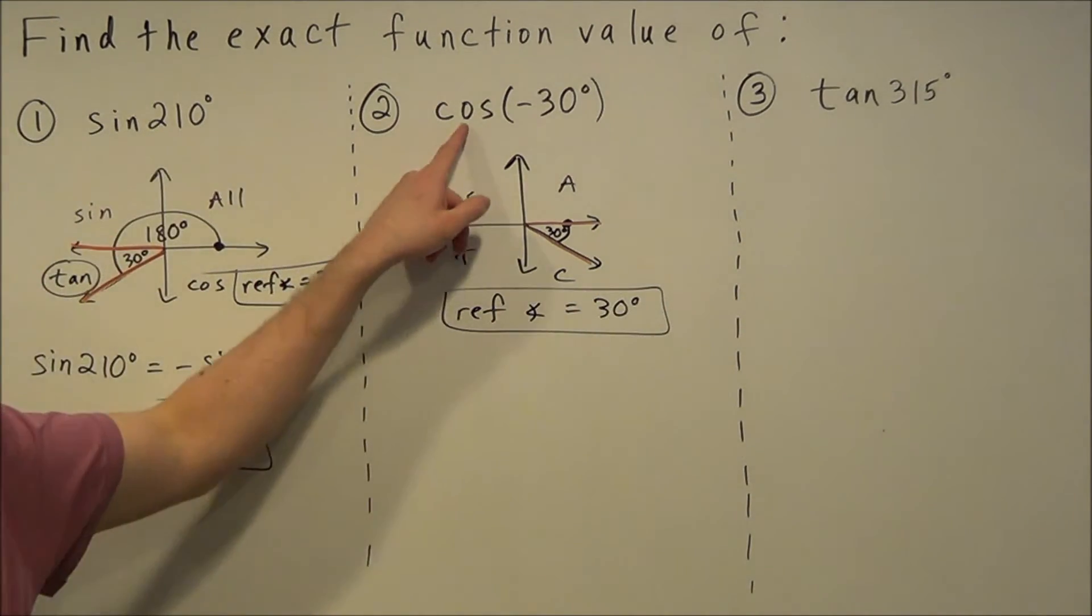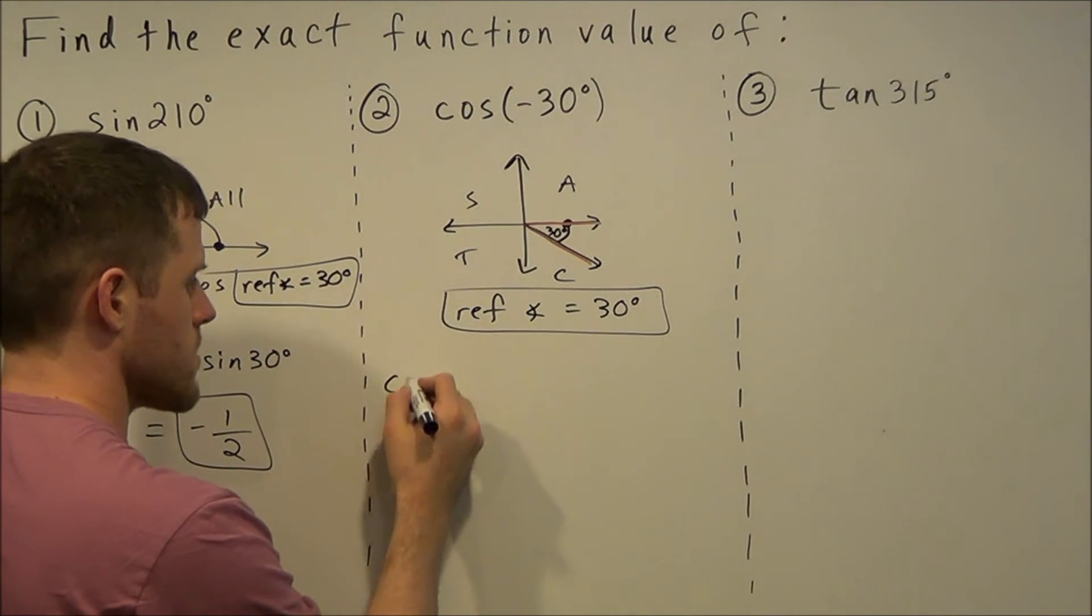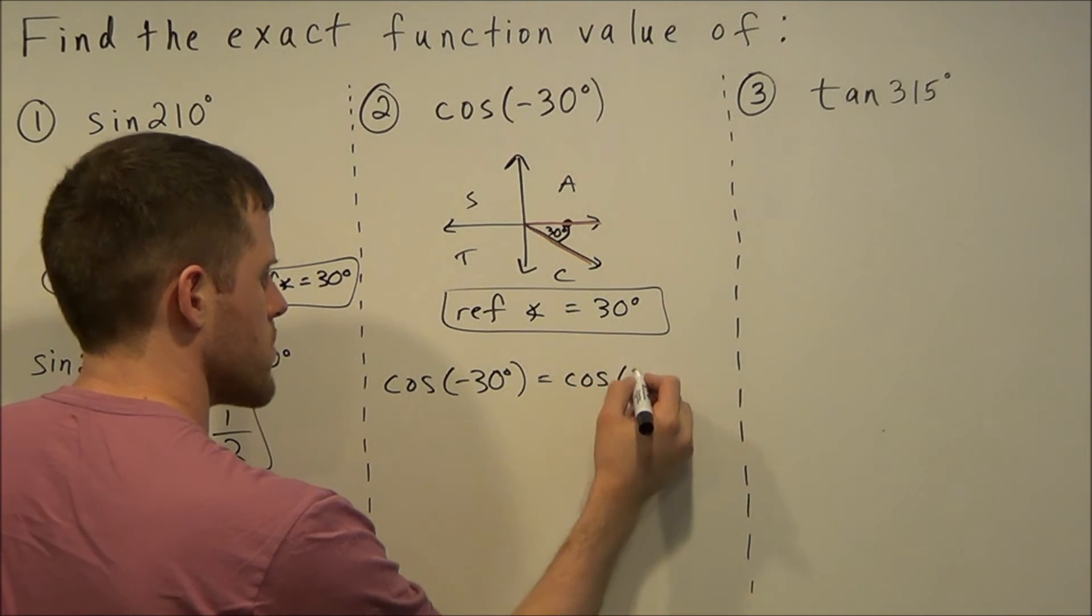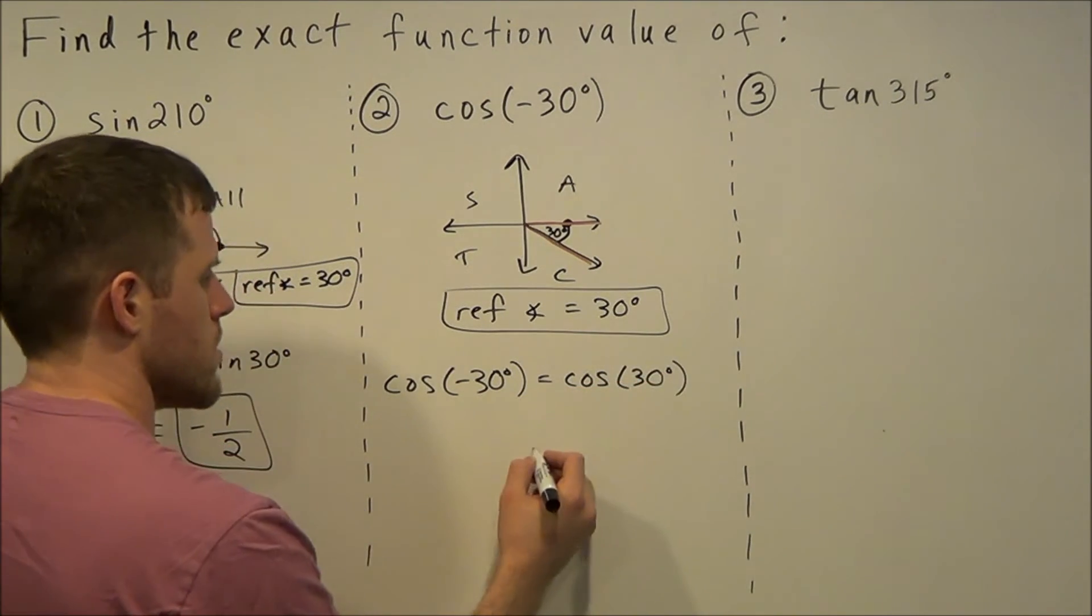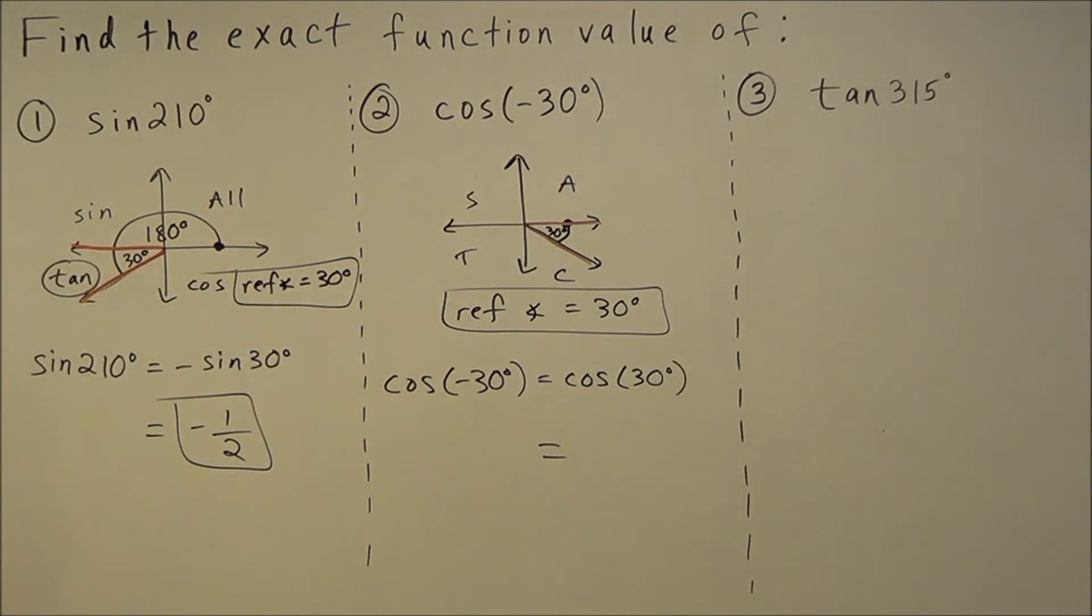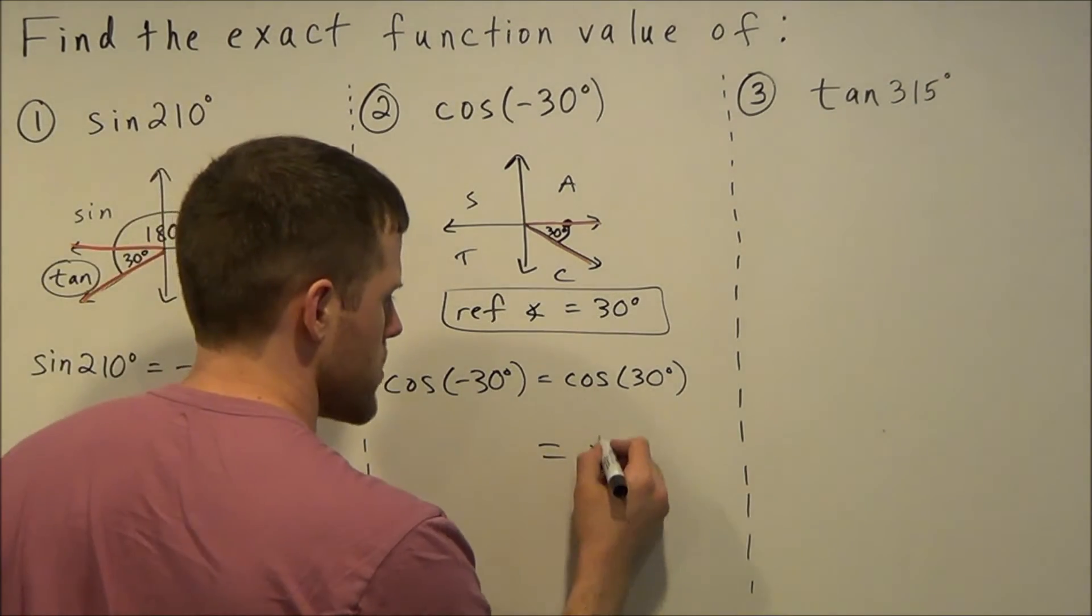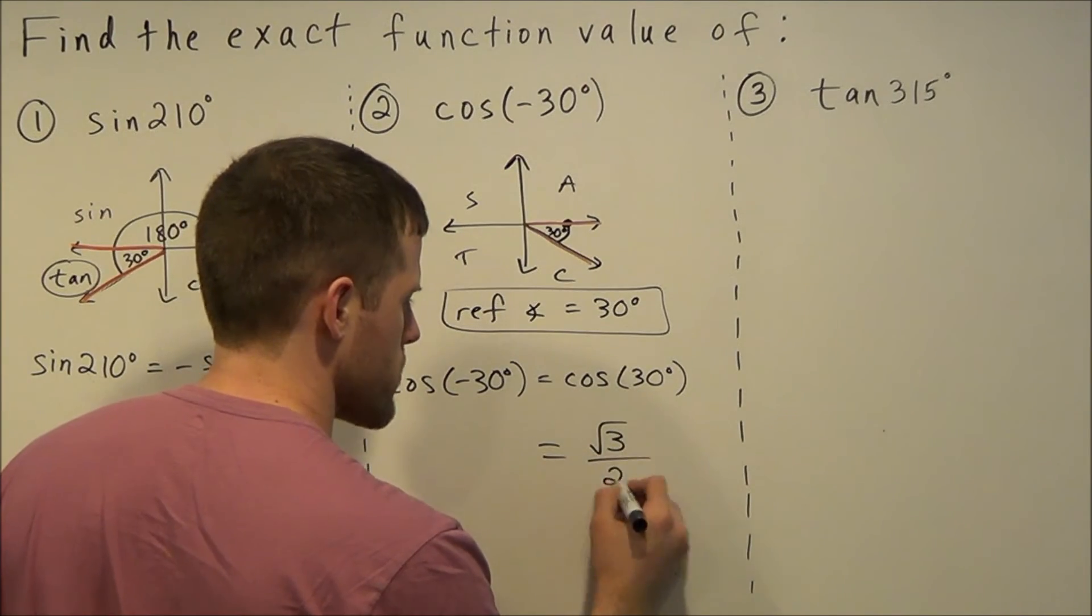This allows us to rewrite this function: cosine of negative 30 degrees equals cosine of positive 30 degrees, which once again using a 30-60-90 triangle will tell you cosine of 30 is equal to radical 3 over 2.